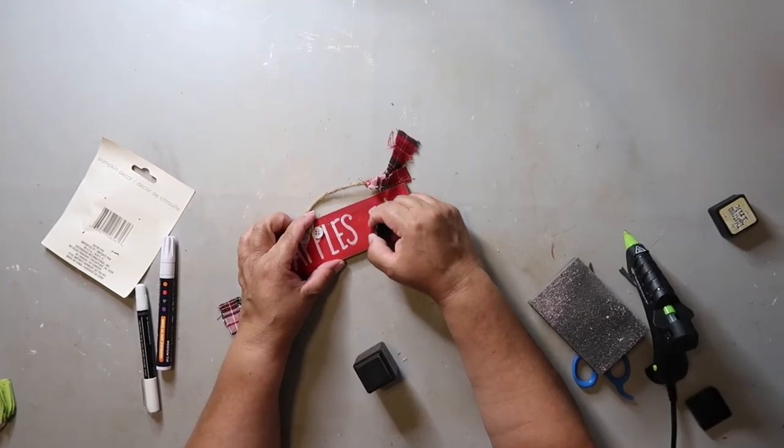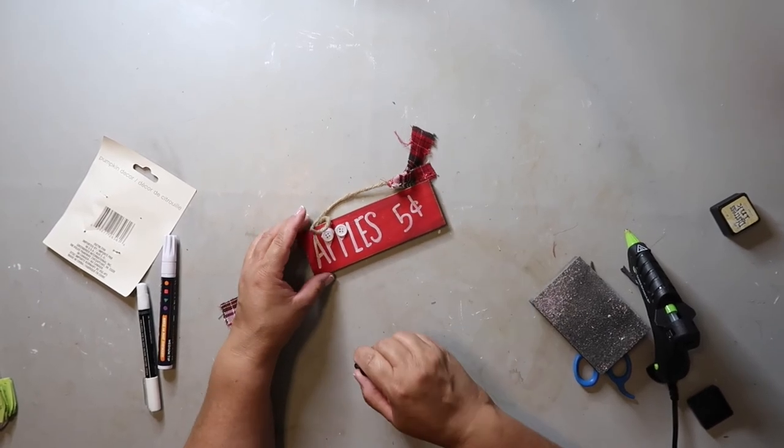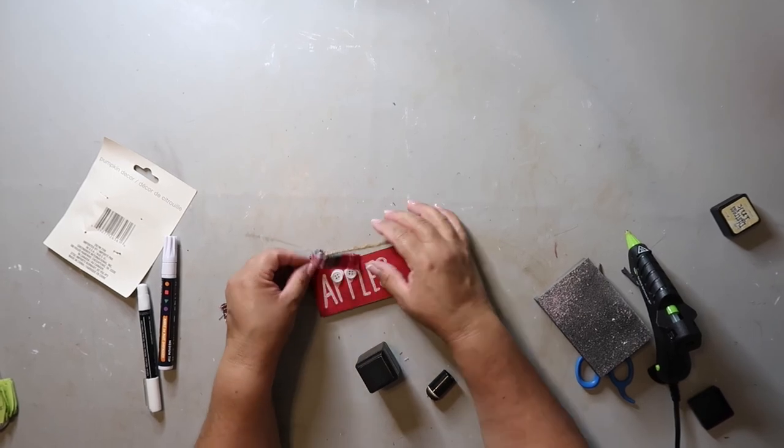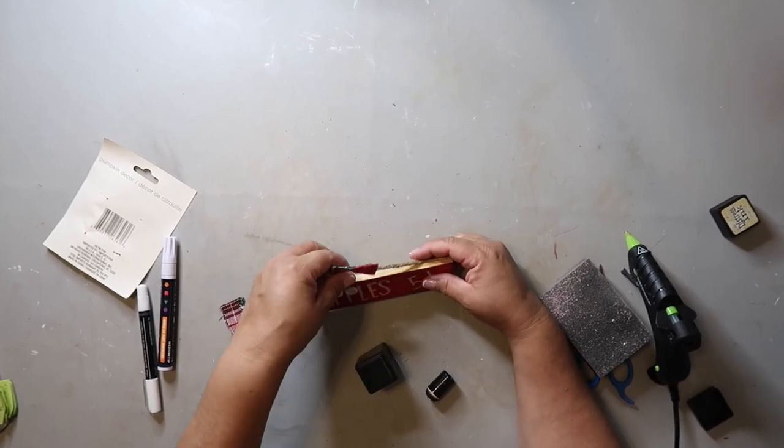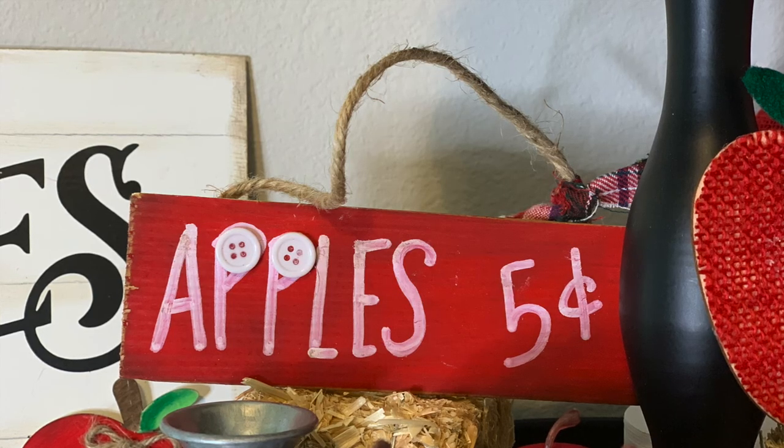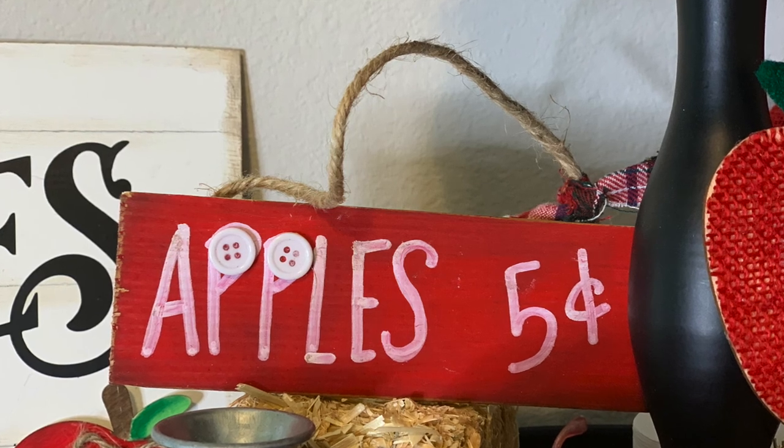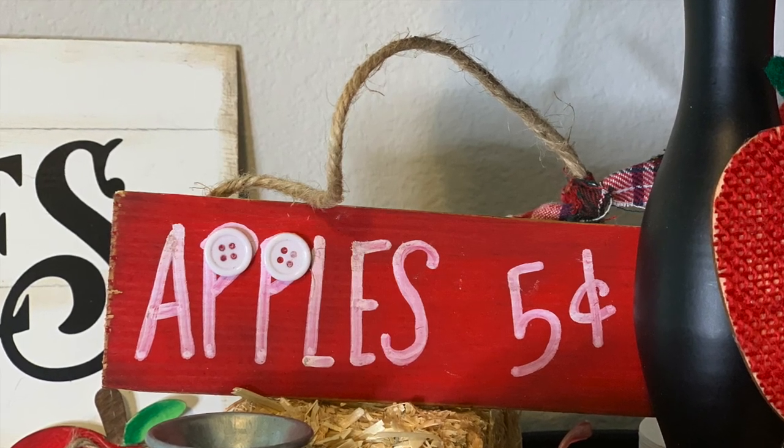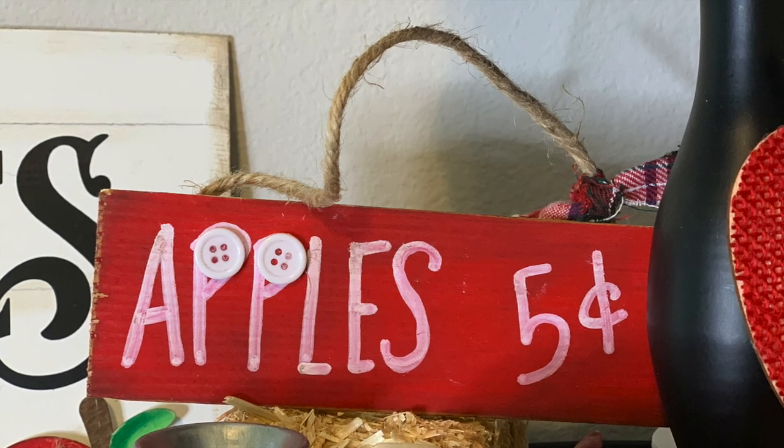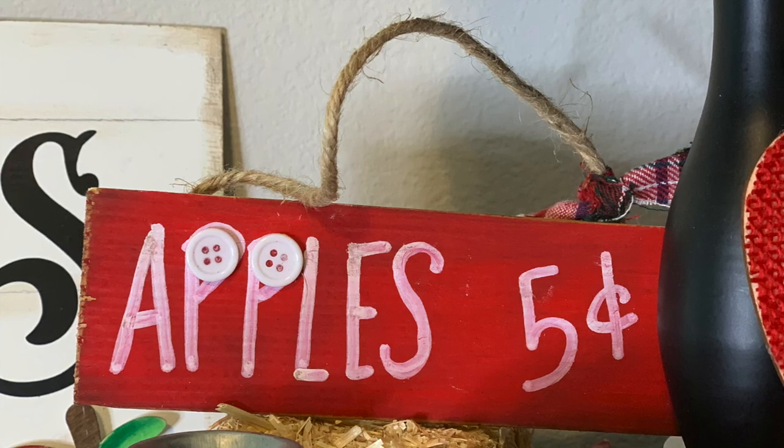I did take some of my distressing ink and kind of distressed it a little bit. And then I just made sure that the little scrap of flannel that I was using as an additional embellishment was laying like I wanted it to. And this is how it turned out. I like it. Now, I feel like I could have used maybe a little bit bigger buttons or possibly made the writing a little bit more crude looking, if you will. But I really like how it turned out, and I hope you do too.